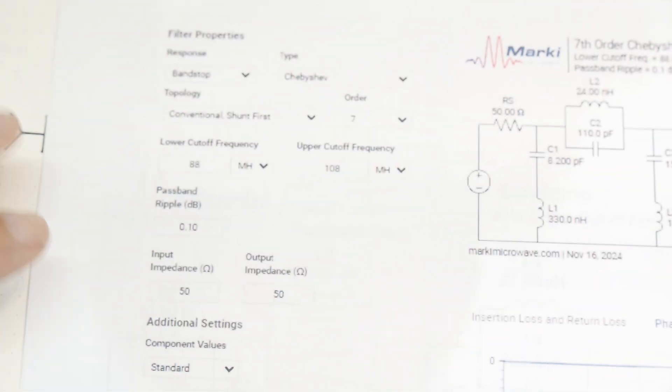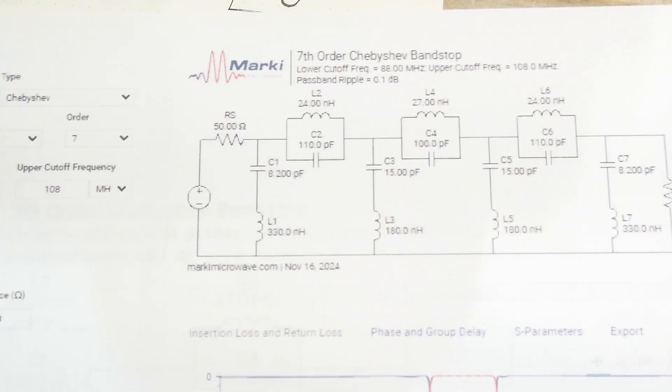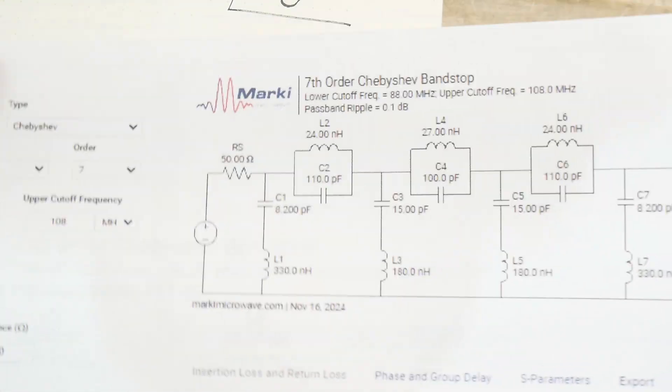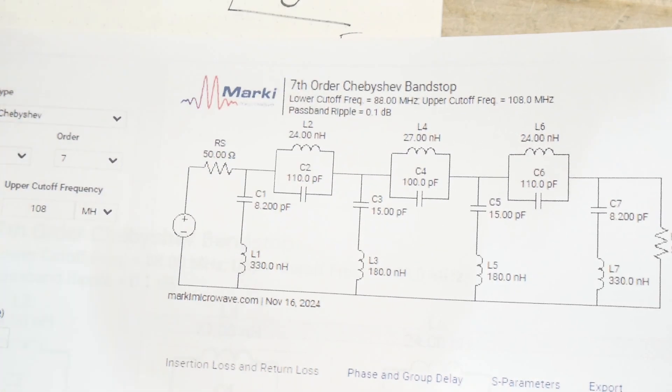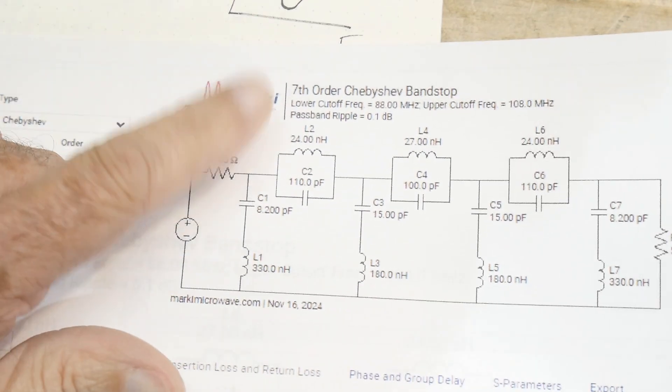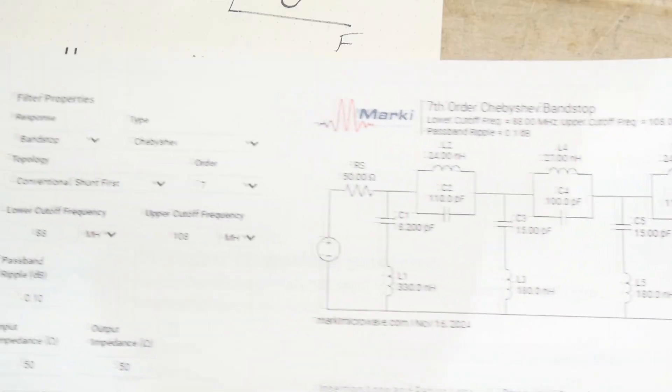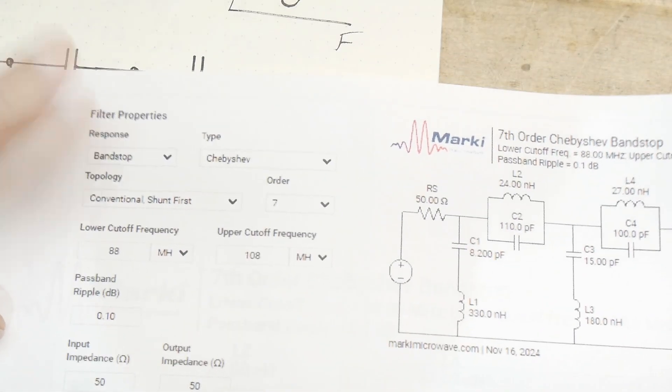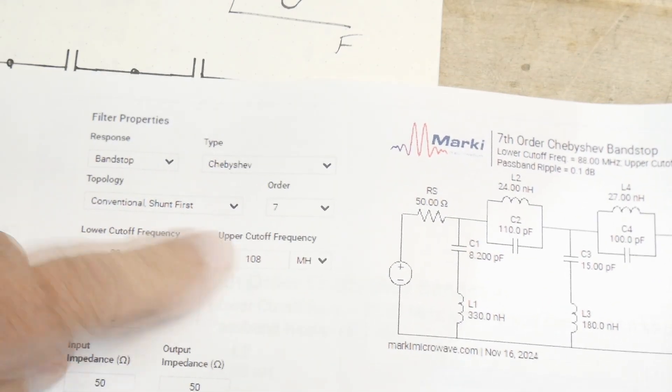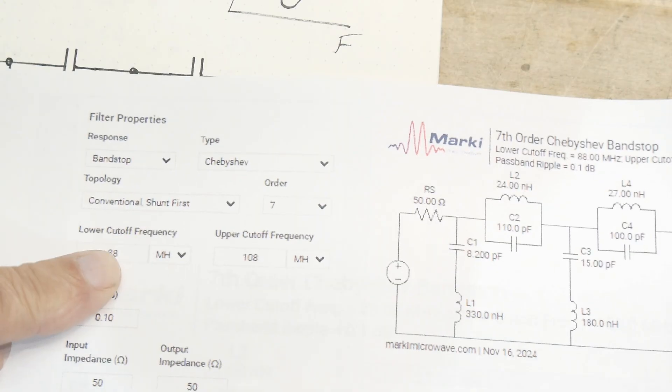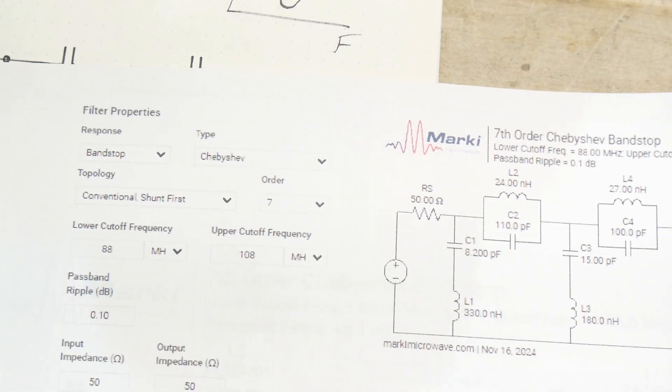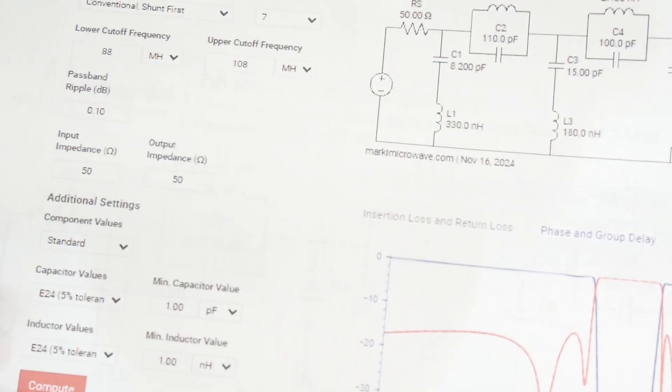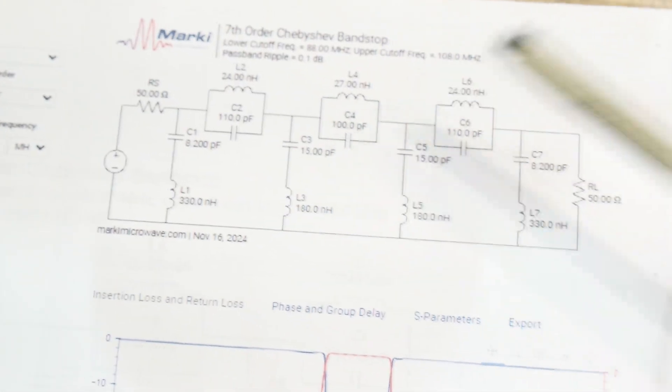This is an online calculator by the Marki company - I love their online calculators. Go there, they've got a whole bunch of them. I said I want a band stop filter, Chebyshev, seventh order, 88 megahertz to 108 megahertz, 50 ohms. It created a band reject filter with these values.